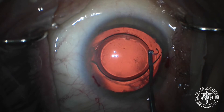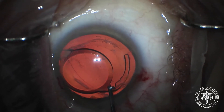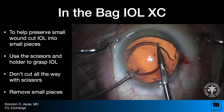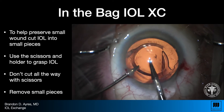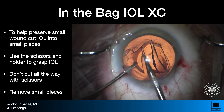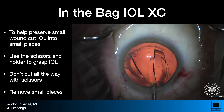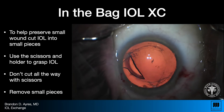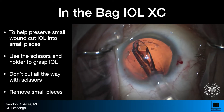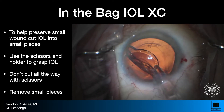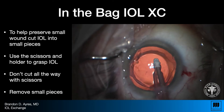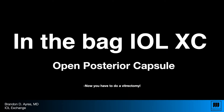Once you get things freed up, lift the IOL up into the anterior chamber, making sure you've fully visco-dissected the haptics. Then go in with the scissor and a micro forcep — both working together. The scissor holds, the holder holds, and you can use both hands to cut the implant. Don't cut the scissor all the way through — leave it a little bit open so it doesn't close inside the IOL, which makes it hard to find the cutting track. Go a little slow. Then put the new implant in the capsular bag, taking the old one out in small pieces.